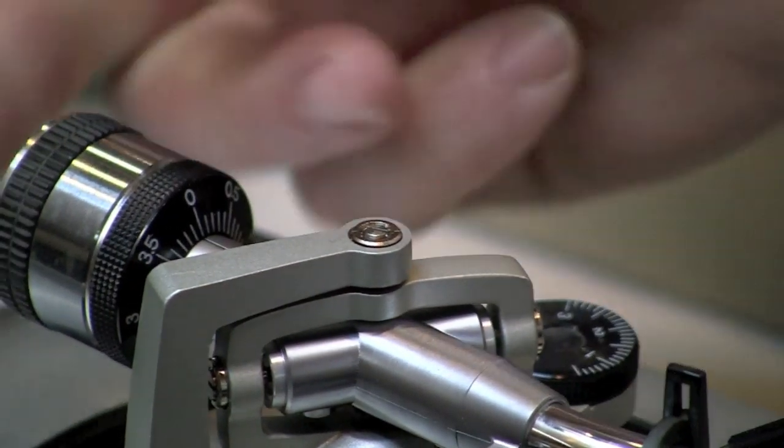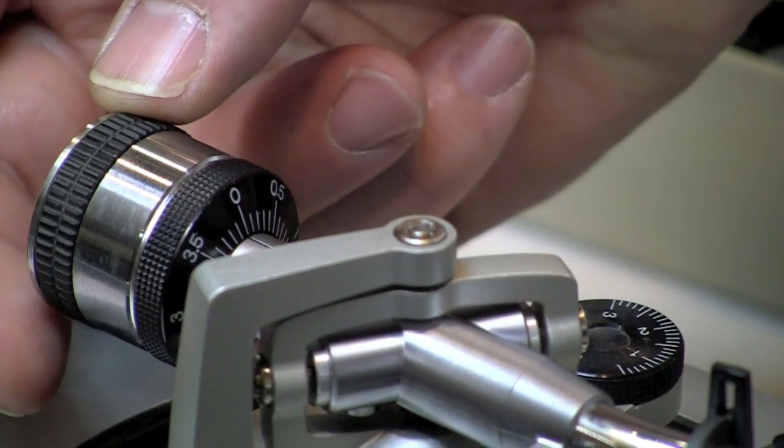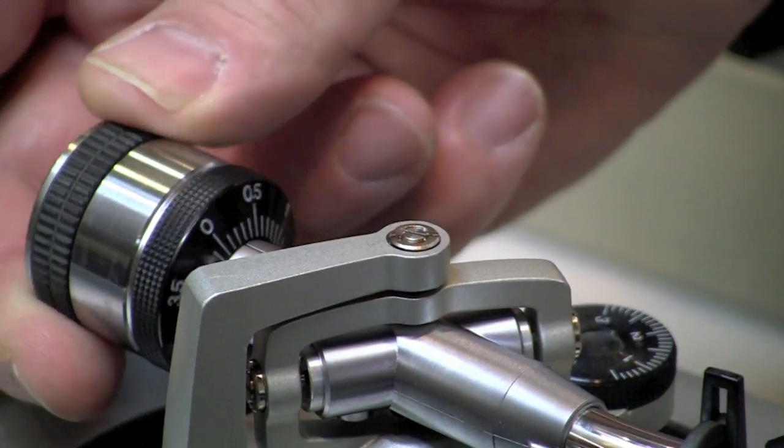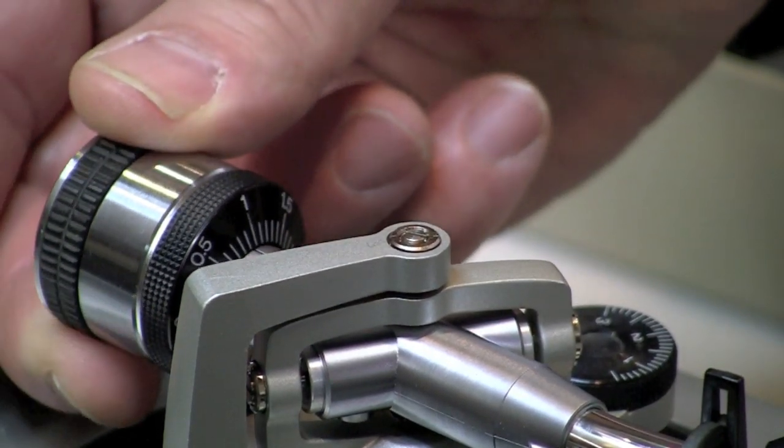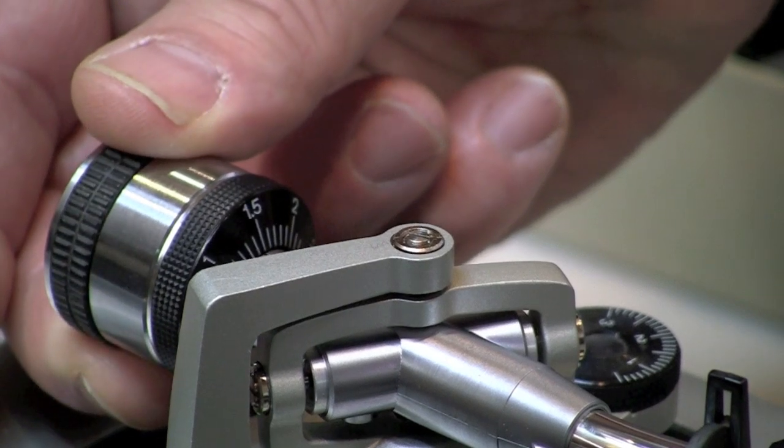Now what we do is we grab the back of the counterweight which will turn both pieces together, and there's a half a gram, there's one gram, and there's 1.5 gram.